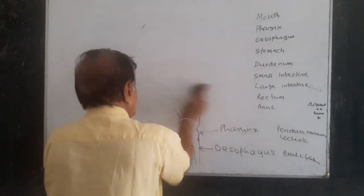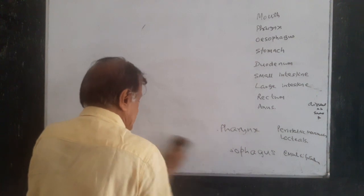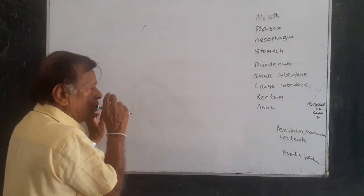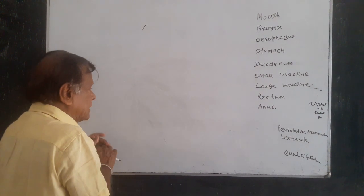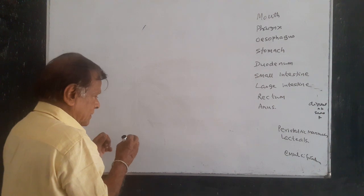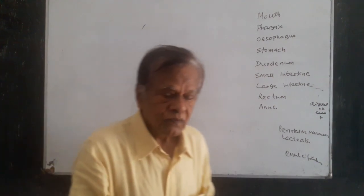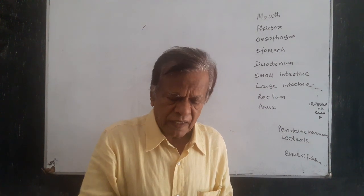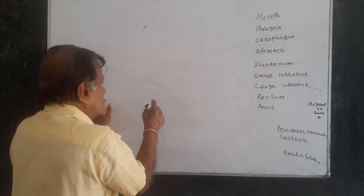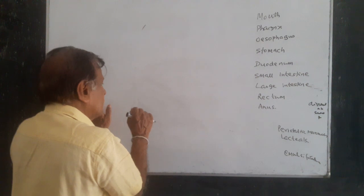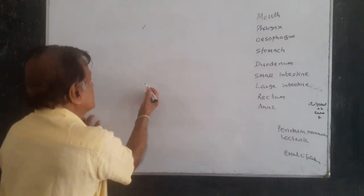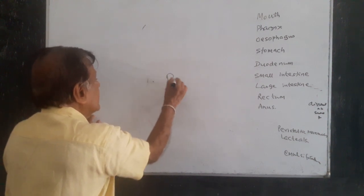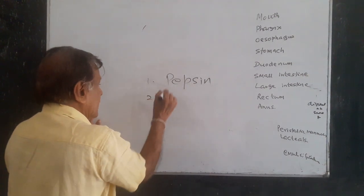In the stomach, there are glands that secrete hydrochloric acid, which gives the acidic medium, and a fluid which contains enzymes. The fluid produced from the stomach is called gastric juice. Gastric juice contains two enzymes: one is pepsin and the other is rennin.